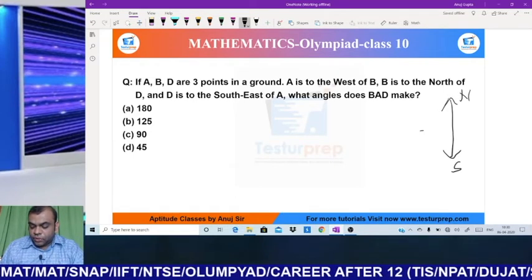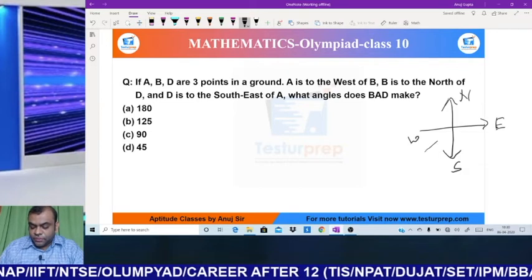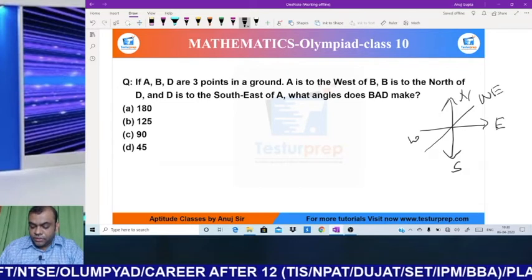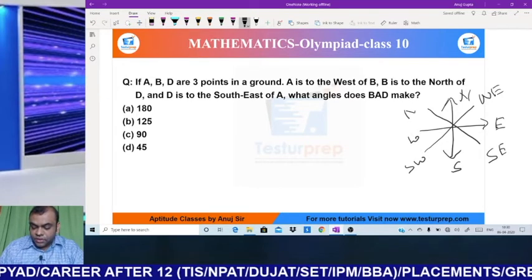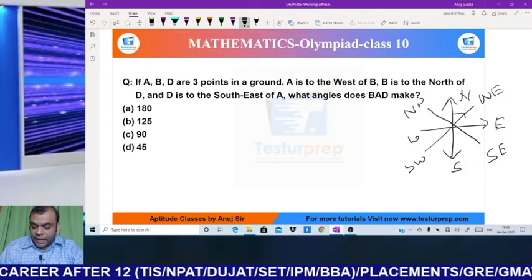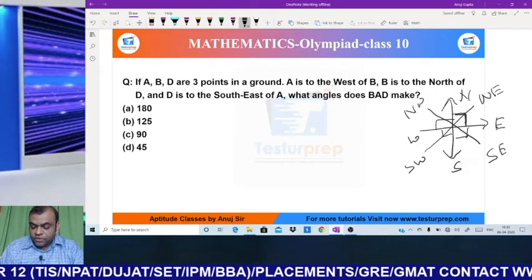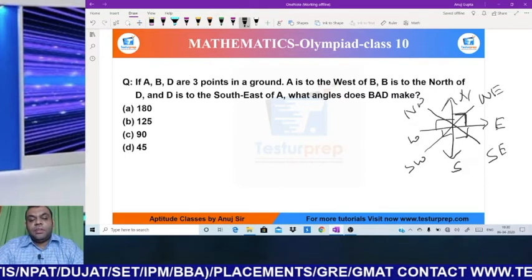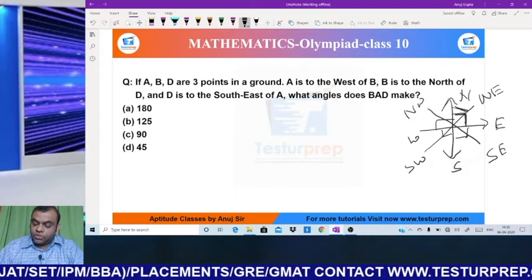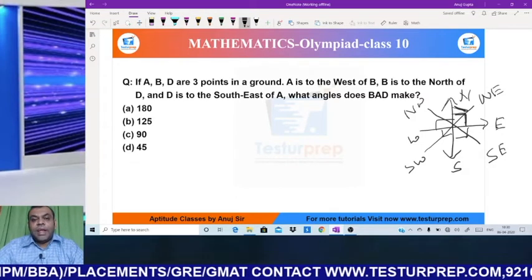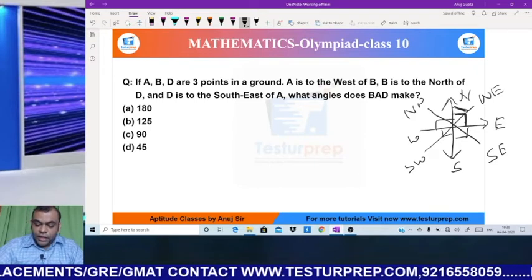This is north, this is south, this is your east, this is your west, and this is northeast, this is southwest, and this is southeast, and this is northwest. Now the angle between north-east, east-south, south-west, west-north - these 4 angles are 90 degrees. And the angle between north and north-east would be 45 degrees. And similarly, all other angles are also 45 degrees.